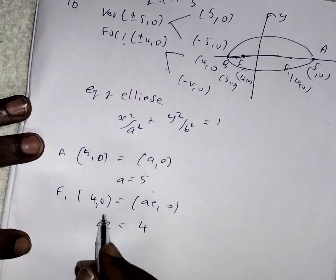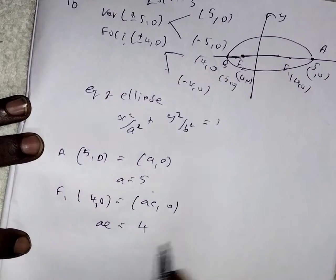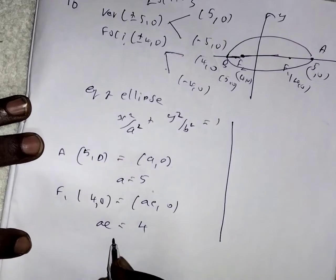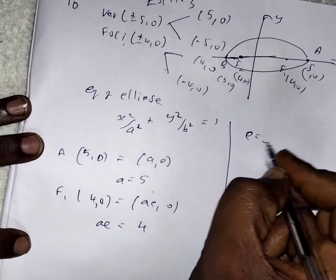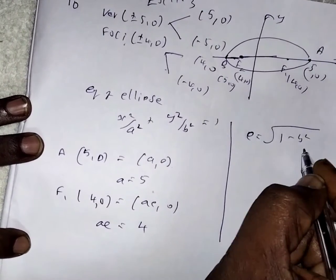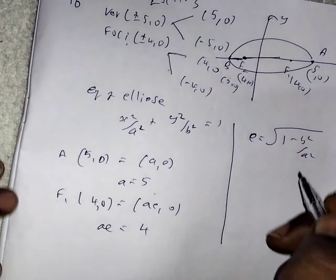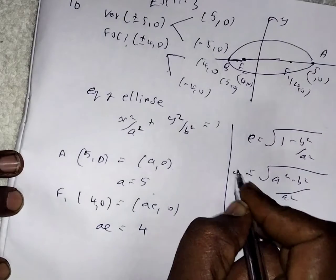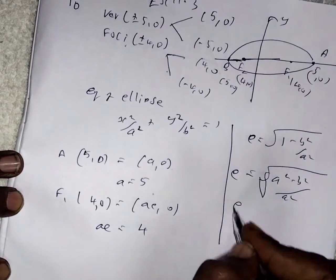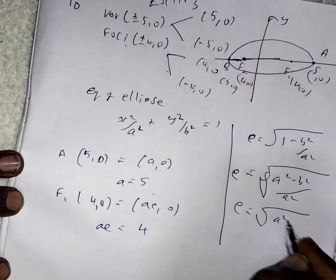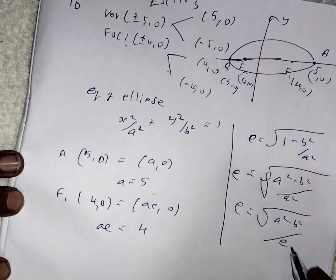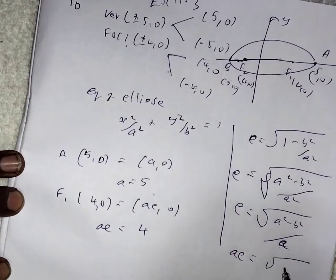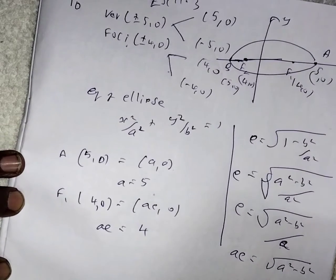Then here substitute the value to find the E value. Otherwise you know the formula: E equal to square root of 1 minus B squared by A squared, which equals A squared minus B squared by A squared. Then E equals square root of A squared minus B squared by A. Then cross multiply: AE equals square root of A squared minus B squared.